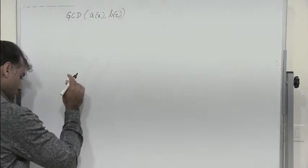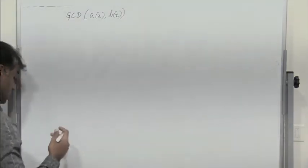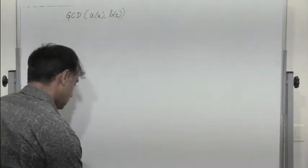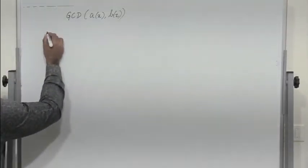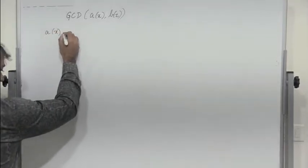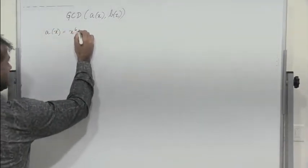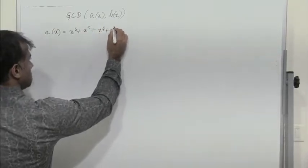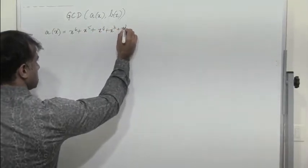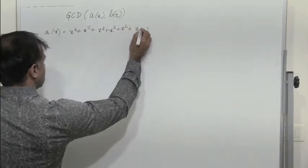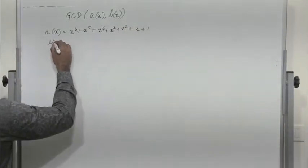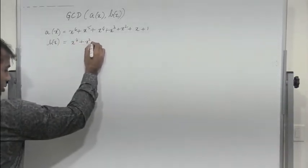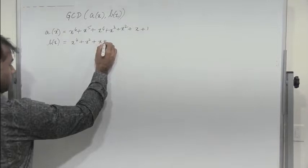Euclid's algorithm, which was used to find the GCD of two numbers A and B, is also used to find the GCD of two polynomials A of x and B of x. To find the GCD of two polynomials, let us take an example. Let A of x be equal to x⁶ + x⁵ + x⁴ + x³ + x² + x + 1, and let B of x be equal to x⁴ + x² + x + 1.